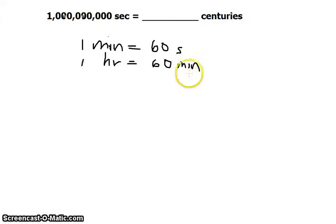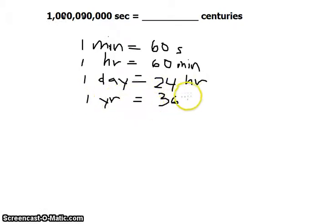And also, 1 day is equivalent to 24 hours, 1 year is equivalent to 365 days, and 1 century is equivalent to 100 years.